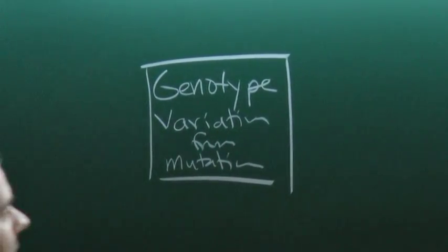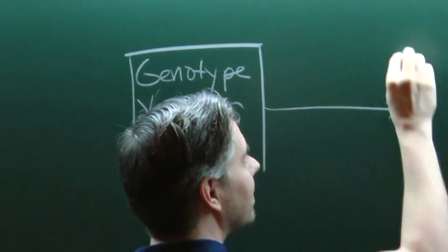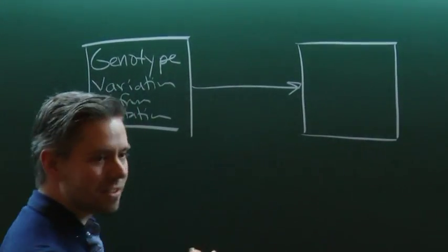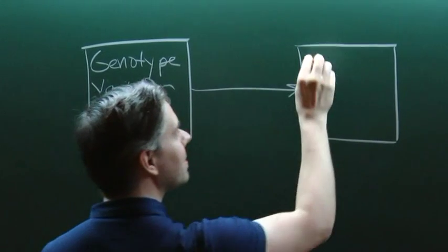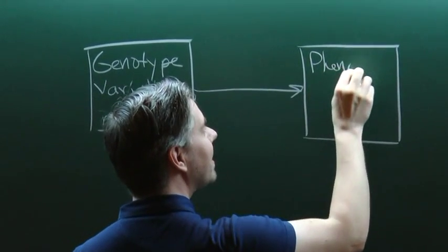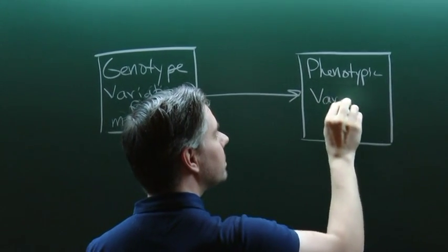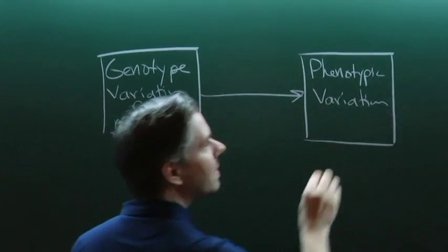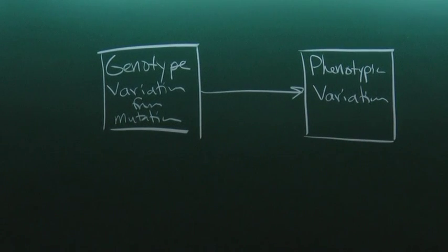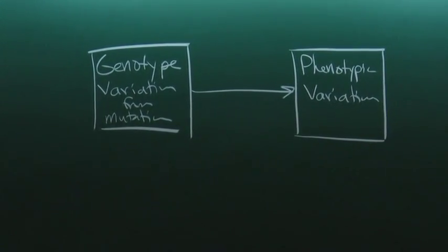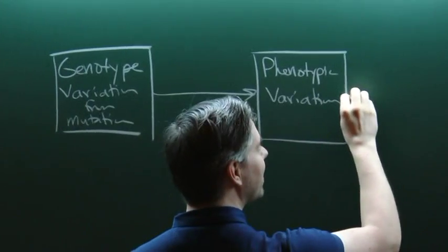The reason why the genotype is important is it's the genotype of the organism that then determines what its phenotype is going to be. So as a result of the variation in the genotype, as a result of the mutations, you're also going to get phenotypic variation.